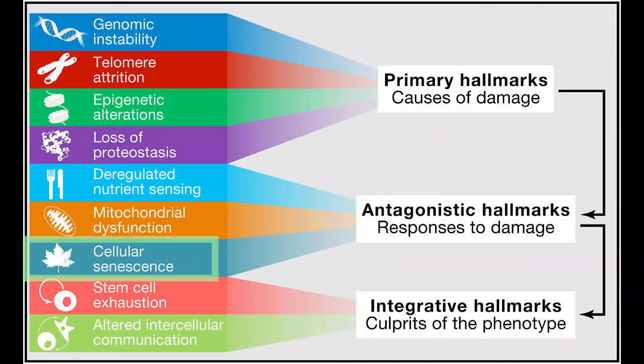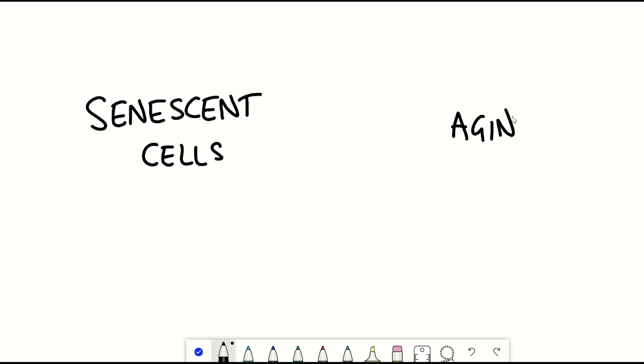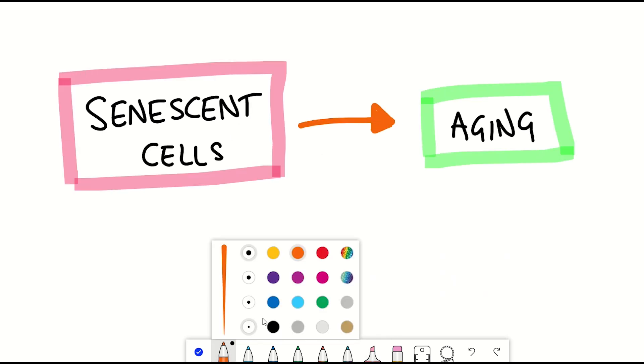Cellular senescence is one of the nine hallmarks of aging. The prevalence seems to increase with age and may even enhance the aging process. But how much evidence is there to support this?